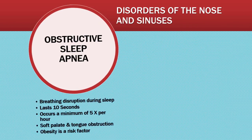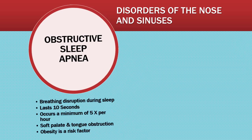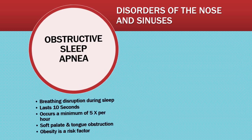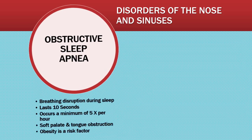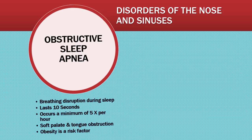Obstructive sleep apnea is when breathing disruption during sleep lasts at least 10 seconds and occurs a minimum of five times in an hour — that's what is diagnostic for obstructive sleep apnea. The most common form occurs as a result of upper airway obstruction by the soft palate or tongue. Obesity is the biggest risk factor for this kind of apnea.